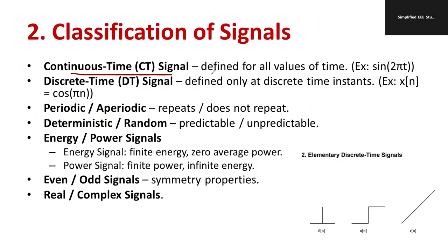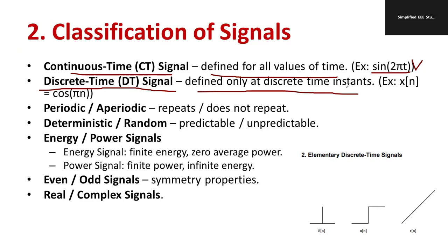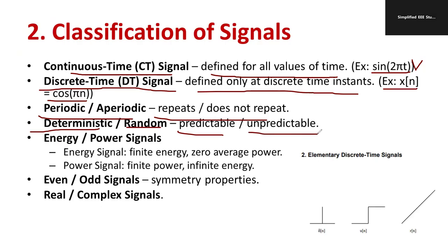A continuous time signal is defined for all values of time — for example, sin(2πt). A discrete time signal is defined only at discrete time instants — for example, x(n) = cos(πn). A periodic signal repeats, while an aperiodic signal does not repeat. A deterministic signal is predictable, while a random signal is unpredictable.